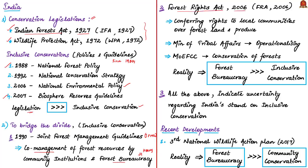A dramatic shift in the Indian conservation paradigm came in 2006 through the Forest Rights Act. This act went beyond sanctioning local usage to conferring rights to local communities over forest land and their produce. The Ministry of Tribal Affairs was mandated with operationalizing the Forest Rights Act of 2006, while conservation remained under the Ministry of Environment, Forest and Climate Change. In reality, the forest bureaucracy has the upper hand and is against inclusive conservation.